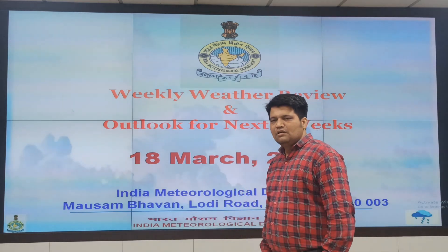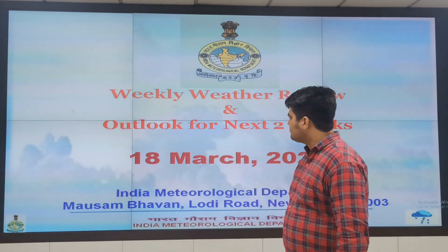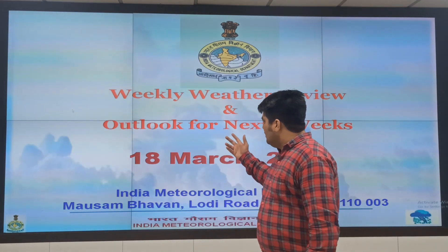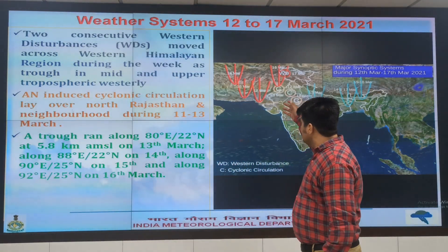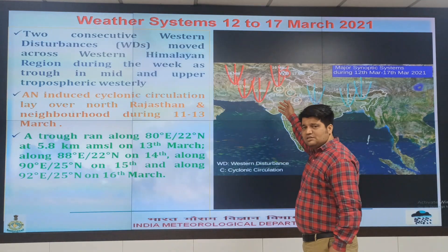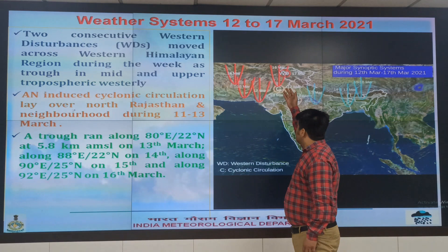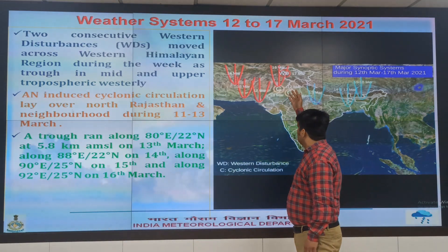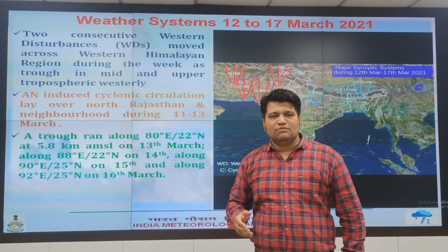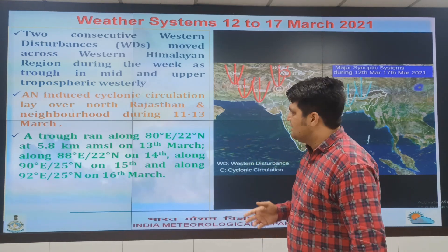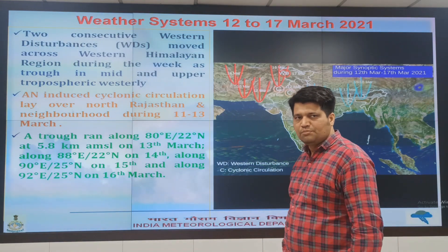I am going to present the weekly weather review and outlook for the next two weeks. During the last one week, as we can see from this picture, there was an active Western disturbance which caused weather activity during 11th to 13th March over the Western Himalayan region and adjoining plains of Northwest India — Punjab, Haryana, Rajasthan, and also over Madhya Pradesh and western parts of Uttar Pradesh.